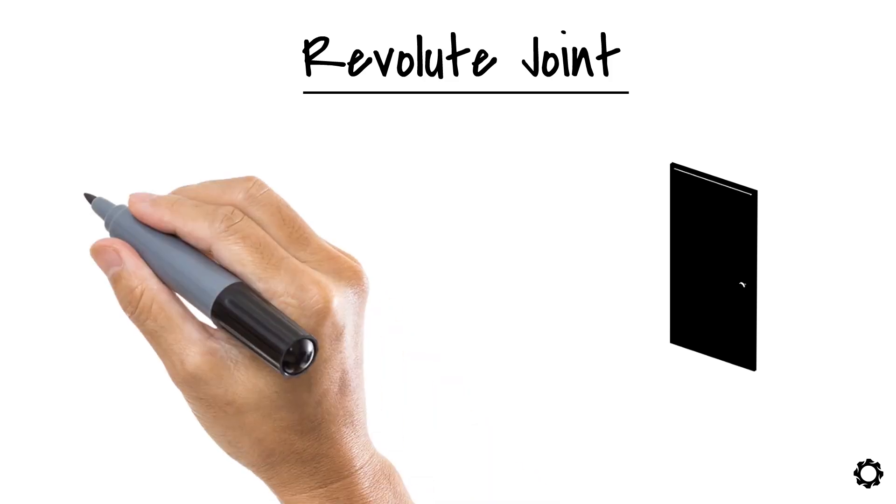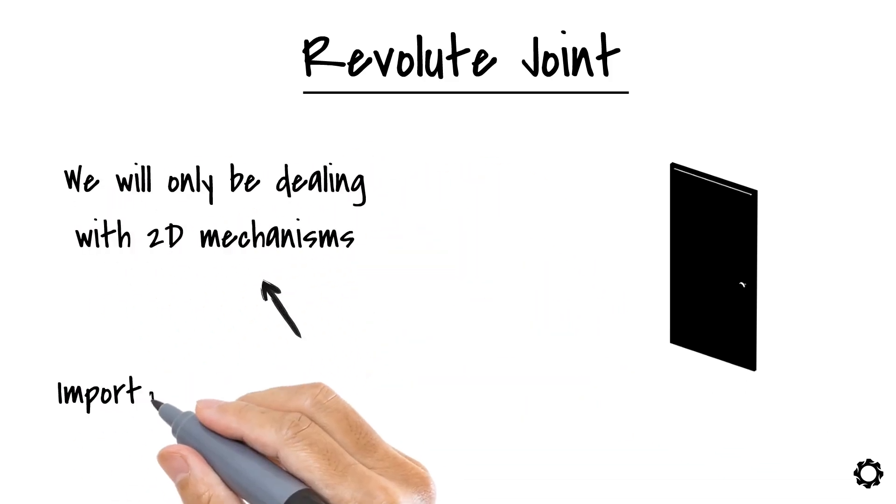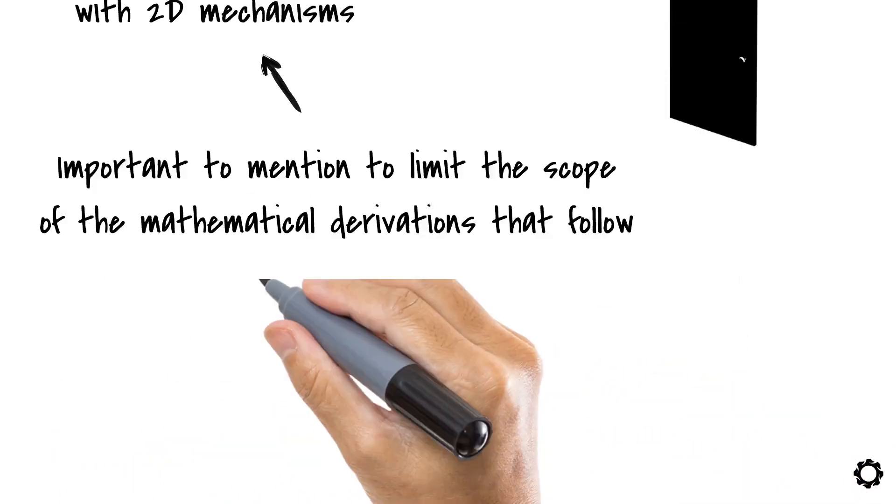As we stated from the beginning of the course, we will only be dealing with 2D mechanisms. This is important to mention to limit the scope of the mathematical derivations that follow.